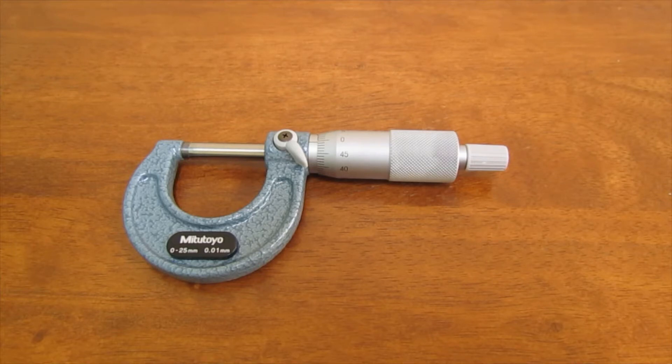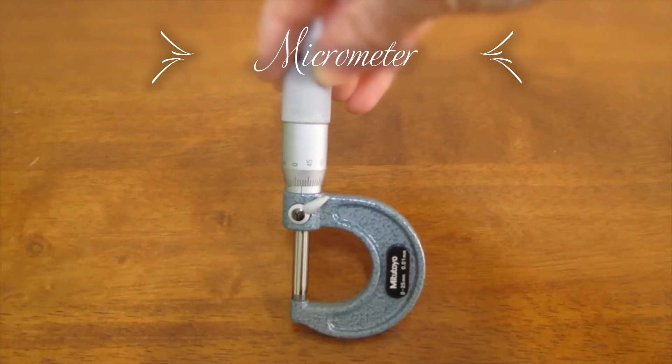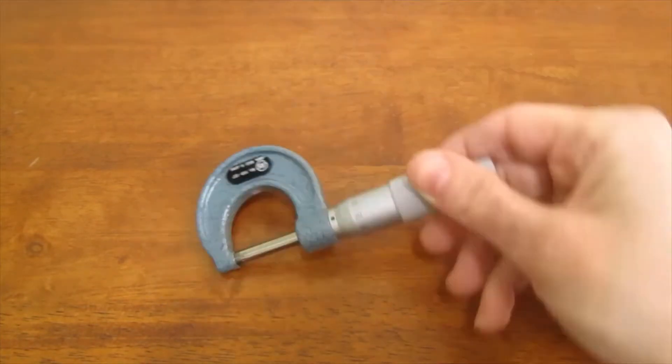A micrometer is used to take very precise measurements. It has this classic shape that looks like a B from your perspective or a D or P or whatever.